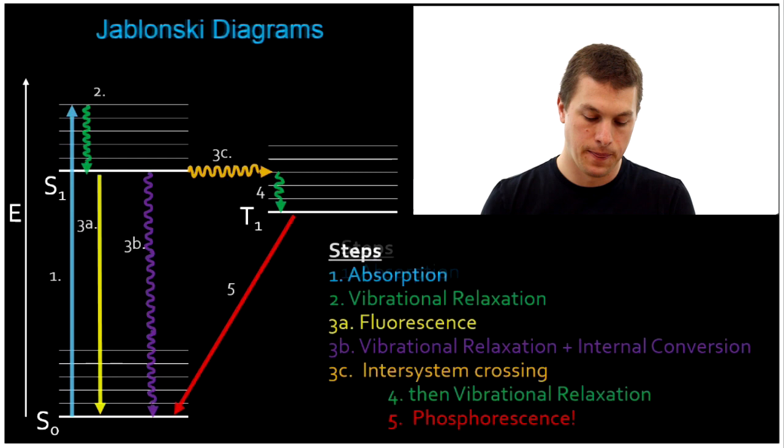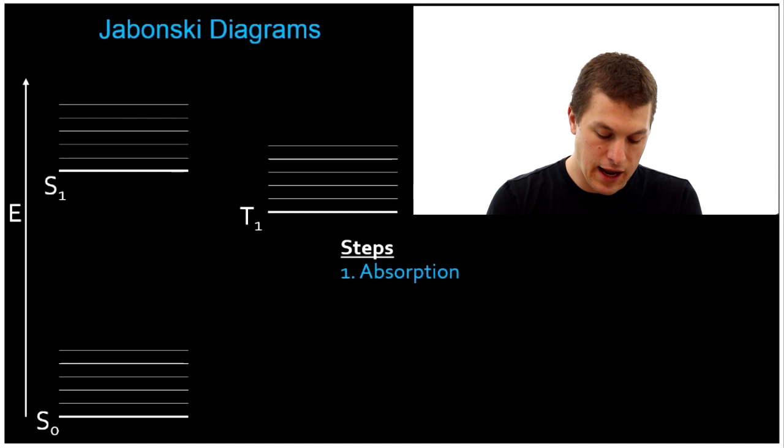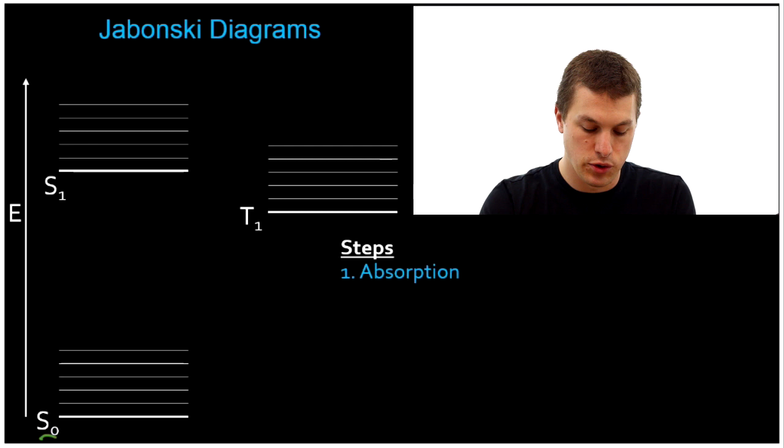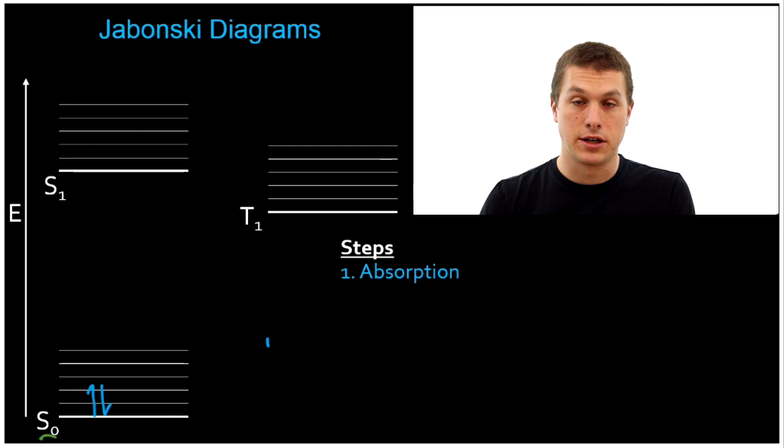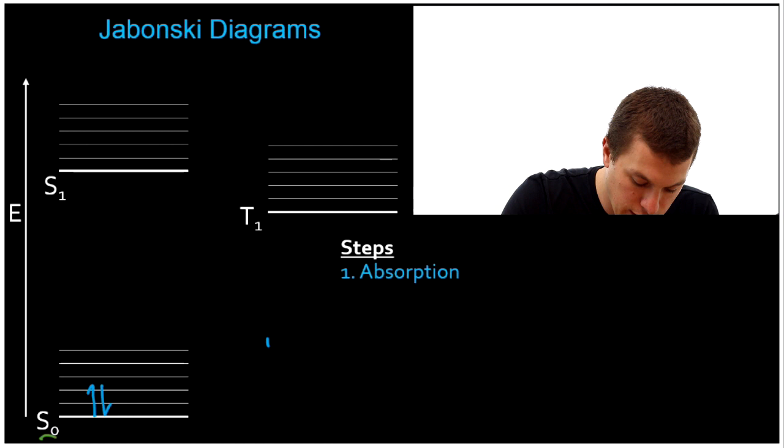First, I'm going to orient you to what these energy diagrams are saying. You'll notice that I have S0 — that is the ground electronic state. So we're talking about an electron starting out in the ground state. We could have two electrons paired. Notice that those paired electrons, one spin up, one spin down, have a net spin of zero. And that means that they're in a singlet state. And that's in fact what this S stands for — singlet.